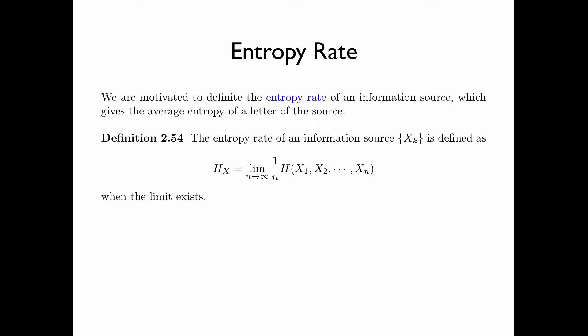When the limit does not exist, the entropy rate of the information source is simply not defined. Note that inside the limit, 1 over n times the entropy of x1, x2, up to xn is the average entropy of a letter of the first n letters of the source. In the next two examples, we show that the entropy rate of an information source may or may not exist.